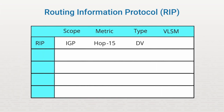RIP is also a Distance Vector Routing Protocol, meaning that it shares its entire routing table with every neighbor at every routing update. Be aware that RIP version 1 doesn't support VLSM, or Variable Length Subnet Masks. The newer version, RIP version 2, has all the same characteristics of RIP version 1 except that it does support VLSM.